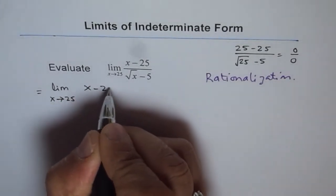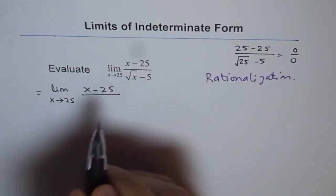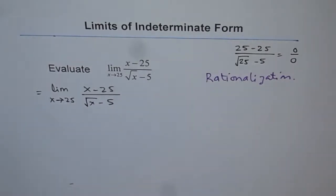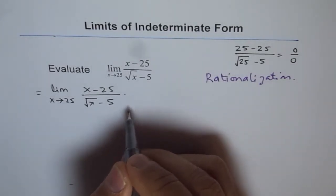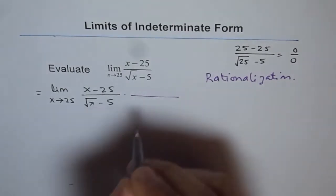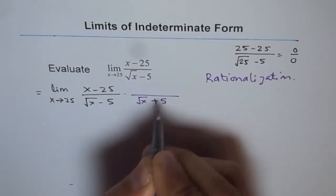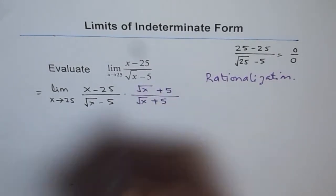So what we will do is, we will rationalize, in this case, the denominator. Since square root is in the denominator, rationalization means multiplying and dividing by the same thing, and that same thing has to be conjugate. So we are rationalizing the denominator. The conjugate of denominator is square root x plus 5. So we will multiply and divide by square root x plus 5.